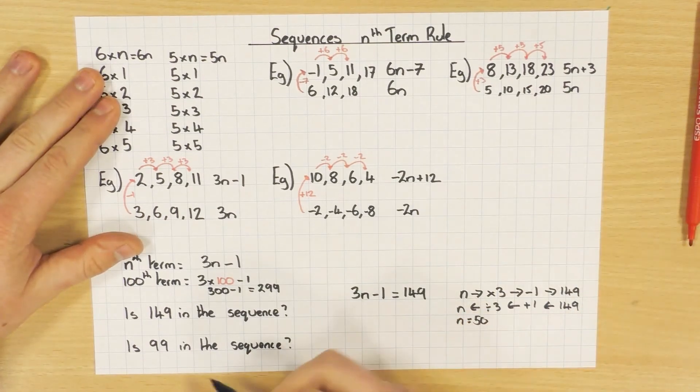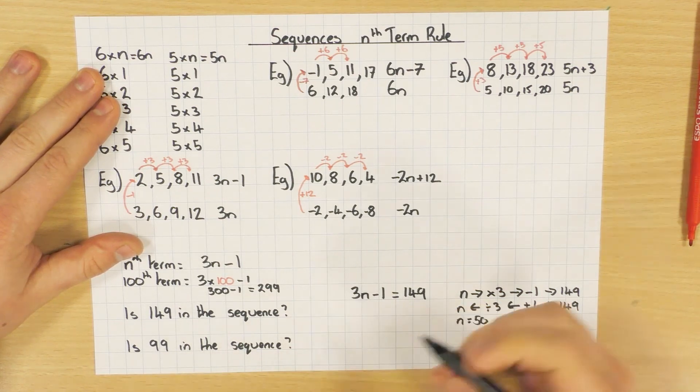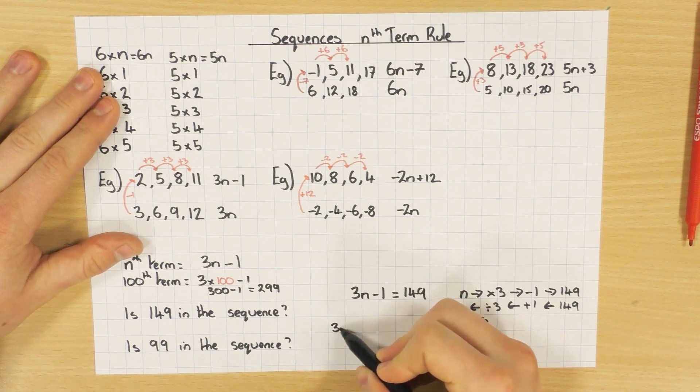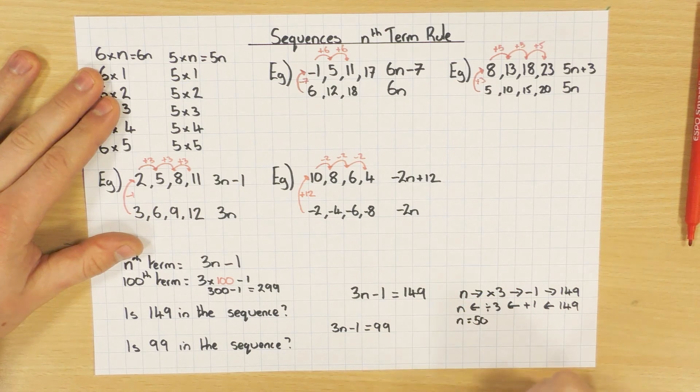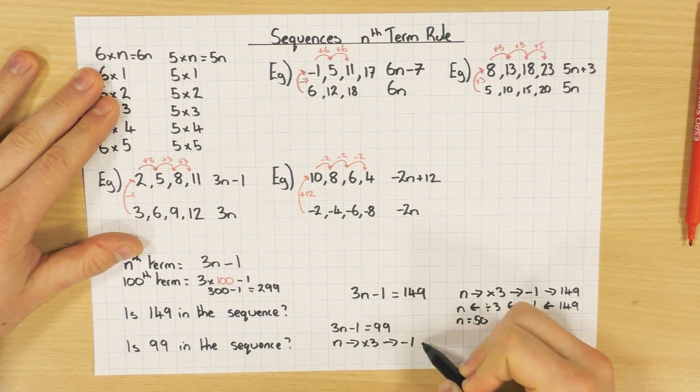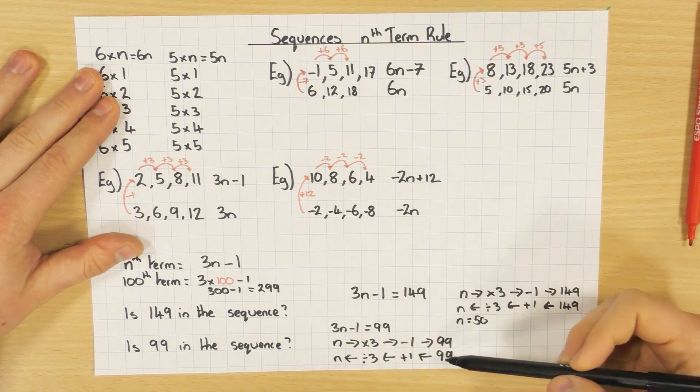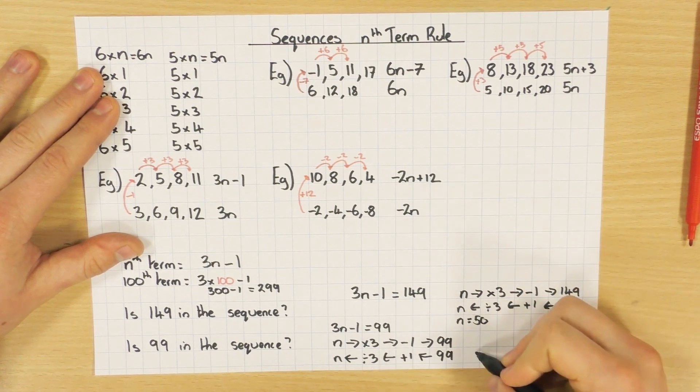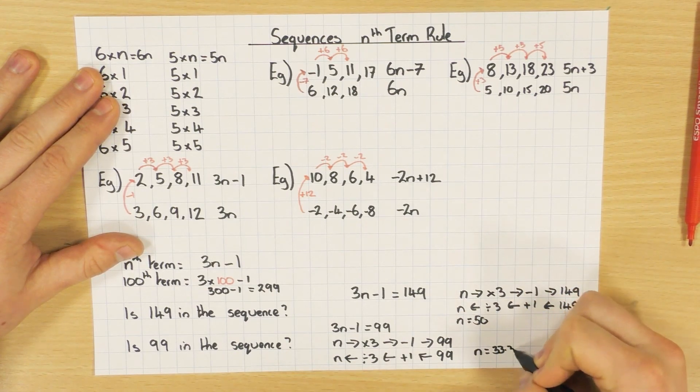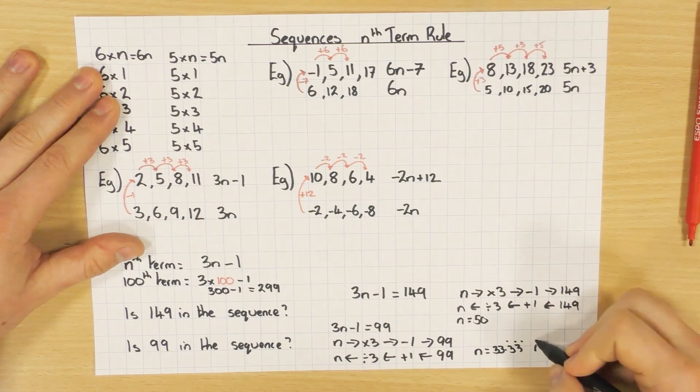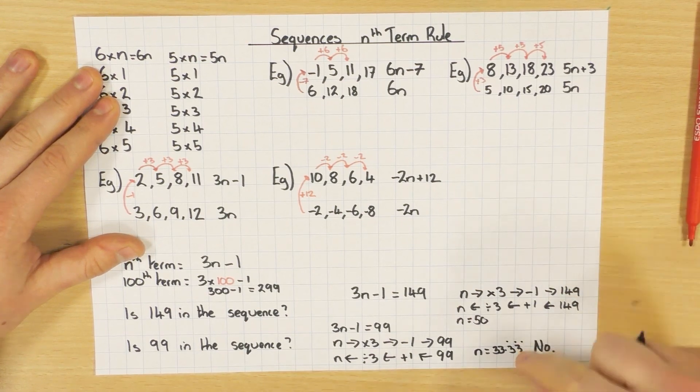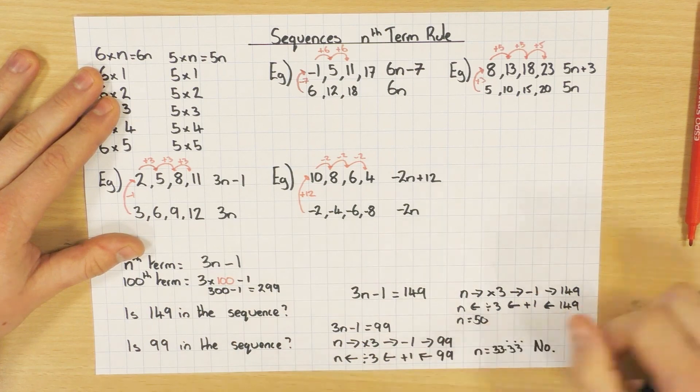And just to do another one, just to prove the other way around. So, is 99 in the sequence. Initially, it looks like it might be, because 3 times table, 99. Yep, looking good. Always check it. So, 3n minus 1 equals 99. And again, solve it. Bit of flowchart. n times 3, take away 1, is 99. Go backwards. 99 plus 1 divided by 3, and we get back to n. So, 99 plus 1 is 100. Divided by 3, ah, nope. It's going to be 33.333 recurring, et cetera, et cetera. So, no. This one is not in the sequence, because n is not a whole number. And that's how you can prove if a number is in the sequence or not.